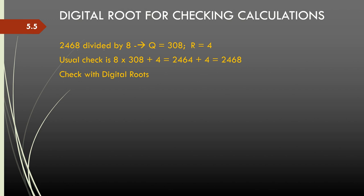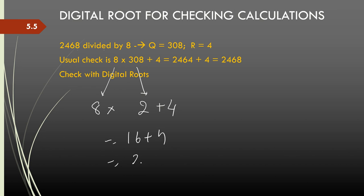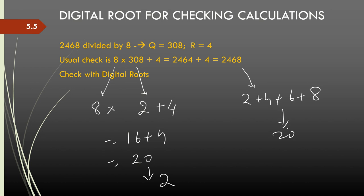Similarly, to check a division: 2468 divided by 8 gives quotient 308 and remainder 4. We verify by multiplying the quotient with the divisor and adding the remainder. Using digital roots: digital root of 8 is 8, digital root of 308 is 3 plus 8 is 11, then 1 plus 1 is 2. So 8 times 2 is 16, plus 4 gives 20, and the digital root of 20 is 2. Digital root of 2468 is 2 plus 4 plus 6 plus 8 equals 20, digital root 2. So the calculation checks out.